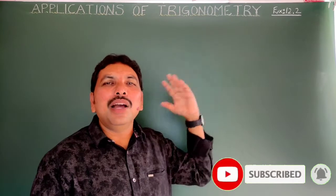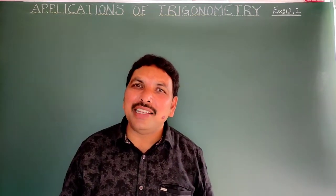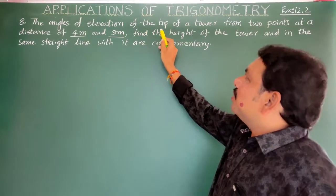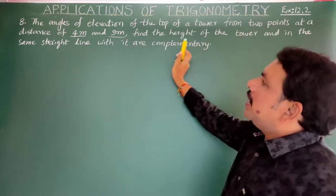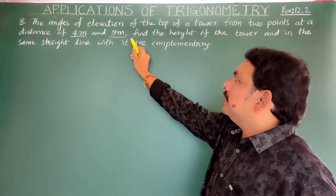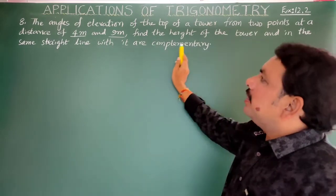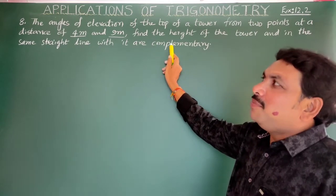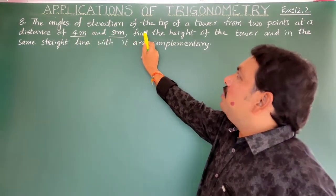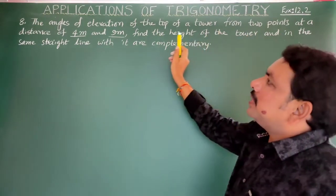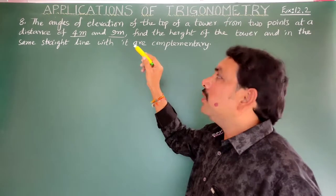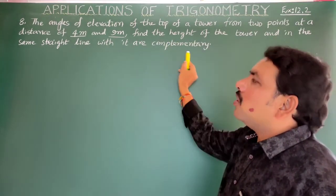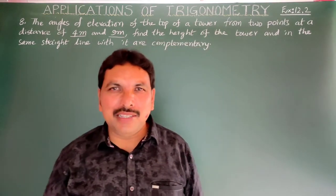The next question: the angles of elevation of the top of a tower from two points at a distance of 4 meters and 9 meters, in the same straight line with it, are complementary. We need to find the height of the tower. Complementary angles means the sum of the angles is equal to 90 degrees.